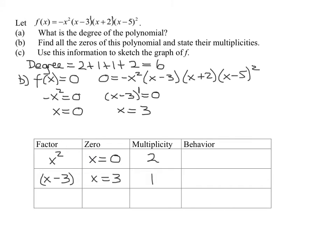Now let's go to our next factor of x plus 2. Set that equal to 0, you get x equals negative 2. So x plus 2 is my factor, x equals negative 2 is my zero. What was the exponent on that factor? A 1.